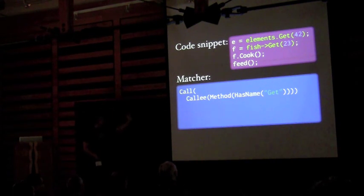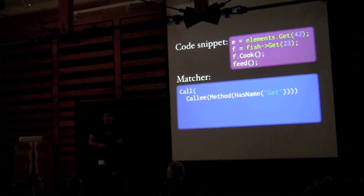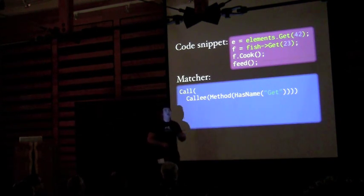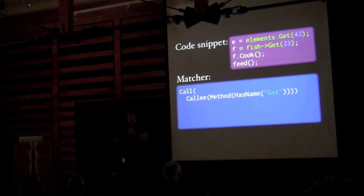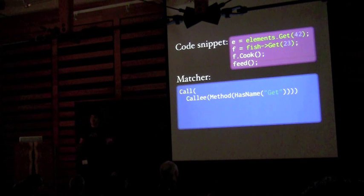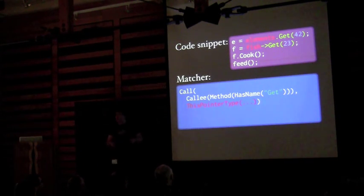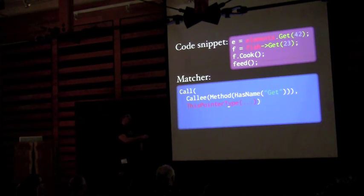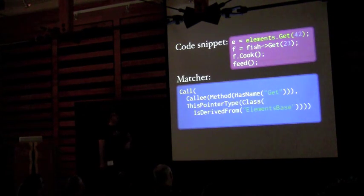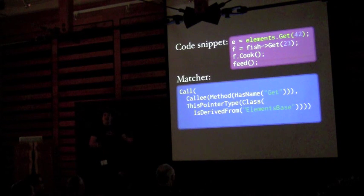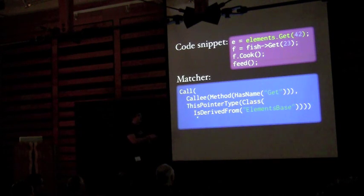Up until now we've been in regular expression land — what you might do with text processing. But now we need a query with no textual basis, because the only way to distinguish these two is in the type system. So we create a scope for narrowing predicates: we focus a predicate on the `this` pointer type. Once we focus on the `this` pointer type, we can fill in a predicate that pins exactly what we're looking for — we want it to be a class derived from `element_base`.